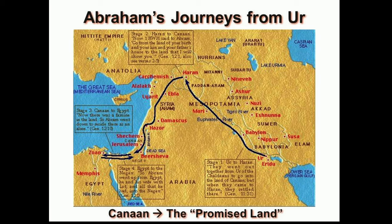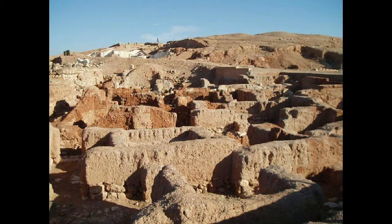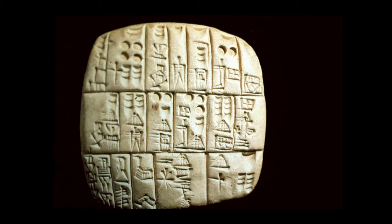In the 1930s, a place called Mari was unearthed, which you see on the map here. Ancient tablets were found there dating back to 2300 BC. Nearly 24,000 tablets were found in the royal archives of the palace, inscribed with messages. Among them were messages from Ur and other cities and places mentioned in Genesis that used to be rejected as unhistorical.